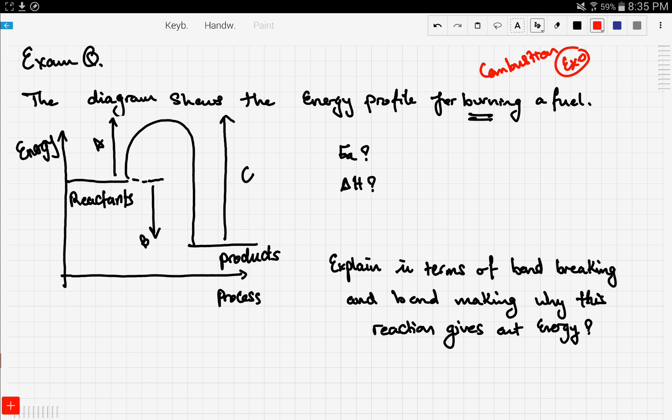The question asks about the activation energy and the delta H. Which of these, A, B, or C, is the activation energy? The activation energy is the energy required to start the reaction. So we move from the reactants towards the highest point of the graph. It's this distance, so it's A.